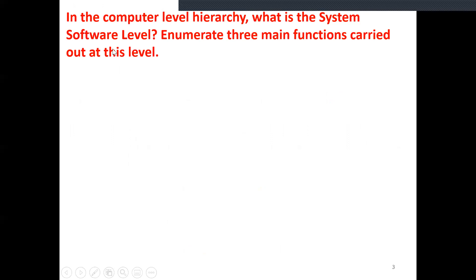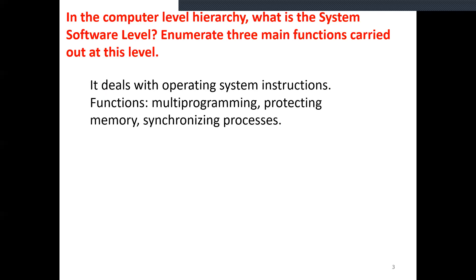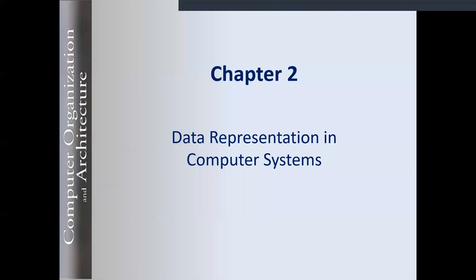What is the system software level? In memory, three main functions are carried out at this level. We talked about the computer level hierarchy — it has seven levels from zero to six, including user, machine, assembly, and software levels. The software level is an optional level that comes with the operating system. The three required functions are: multi-programming, protecting memory, and synchronizing processes. That was a simple review of chapter one.